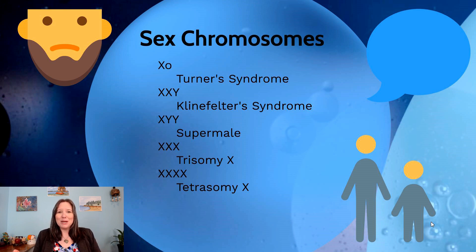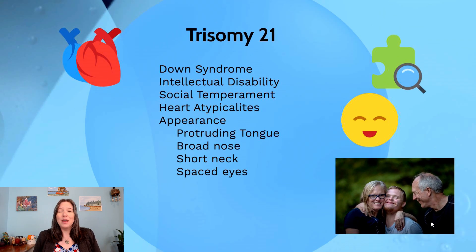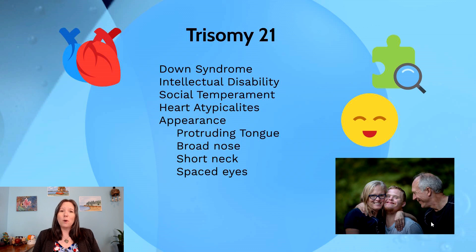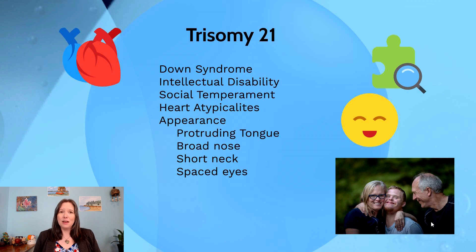The other non-fatal atypical chromosome count is trisomy 21, also known as Down syndrome. Individuals with trisomy 21 tend to have a heightened level of intellectual disability — they may not complete high school or university, but in many cases can get an elementary education and hold jobs requiring physical tasks. They also tend to have a very social and upbeat temperament. However, the condition is linked with significant heart atypicalities — sometimes a hole in the heart at birth — and may require multiple heart surgeries soon after being born.